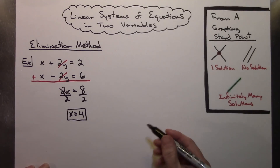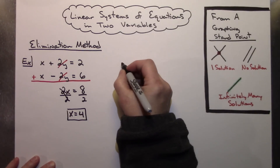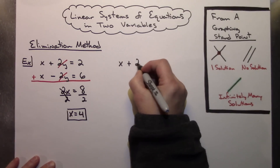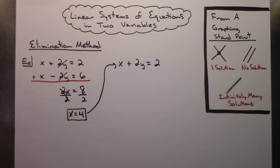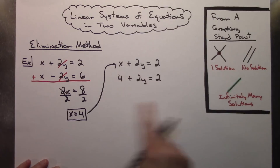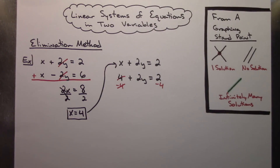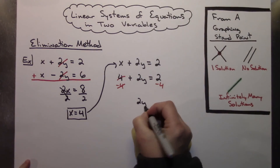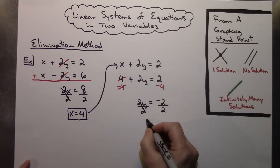Now I can choose to plug x into either the first equation or the second equation — it really doesn't make any difference. I'll go ahead and use that first equation: x plus 2y equals 2. I'll take my x value and plug it in, so I'll have 4 plus 2y equals 2. Solving for y: subtract 4 from both sides, so minus 4 minus 4. The 4's cross out, leaving 2y equals negative 2. Dividing both sides by 2 gives me y equals negative 1.